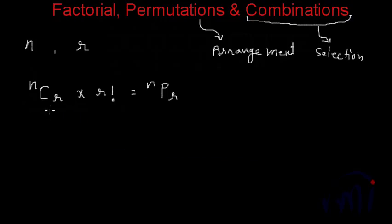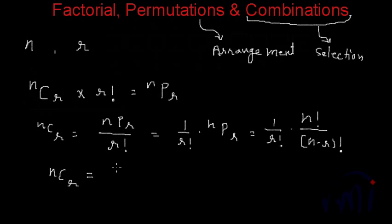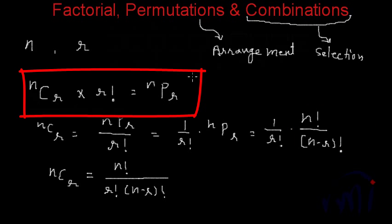The formula for nCr is nPr divided by r factorial, which equals (1/r!) × nPr. Since nPr = n!/(n−r)!, we get nCr = n! / (r! × (n−r)!). This is the formula for combination, and the formula for permutation is nPr = n!/(n−r)!. This is the relation between combinations and permutation — the combination formula is derived directly from the permutation formula, making it easier to remember how they are related.